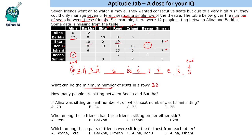How many people are sitting between Bina and Barkha? From Bina to Barkha we have 2 plus 1 is 3, plus 3 is 6, then 7 and 8 — so 15 people between Bina and Barkha.